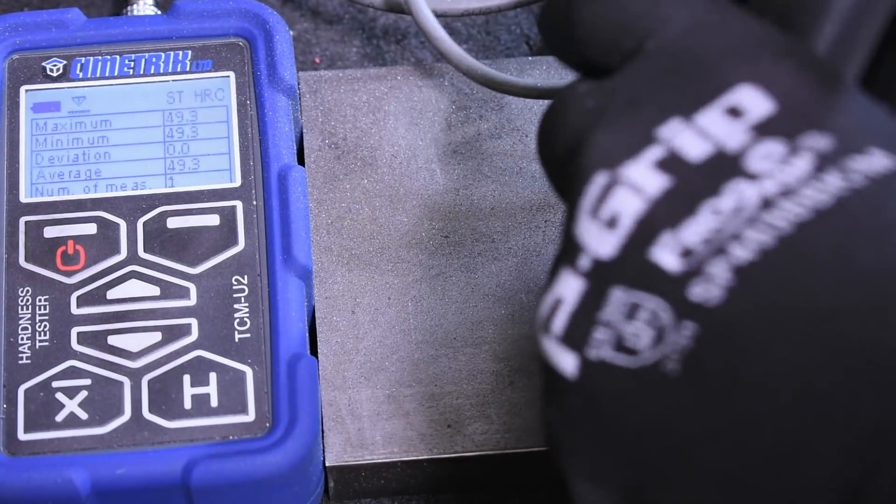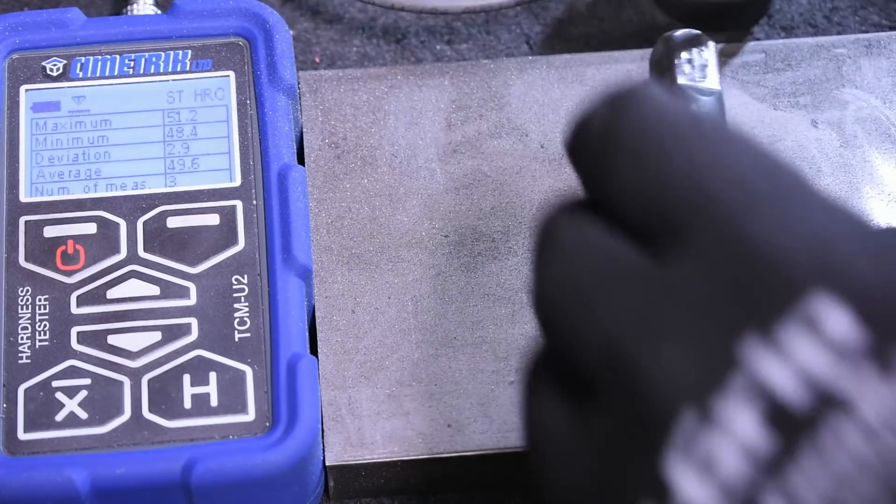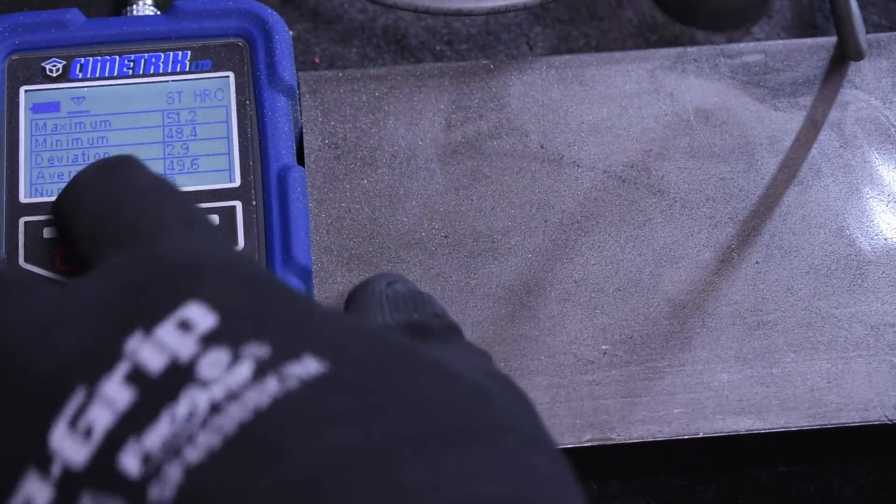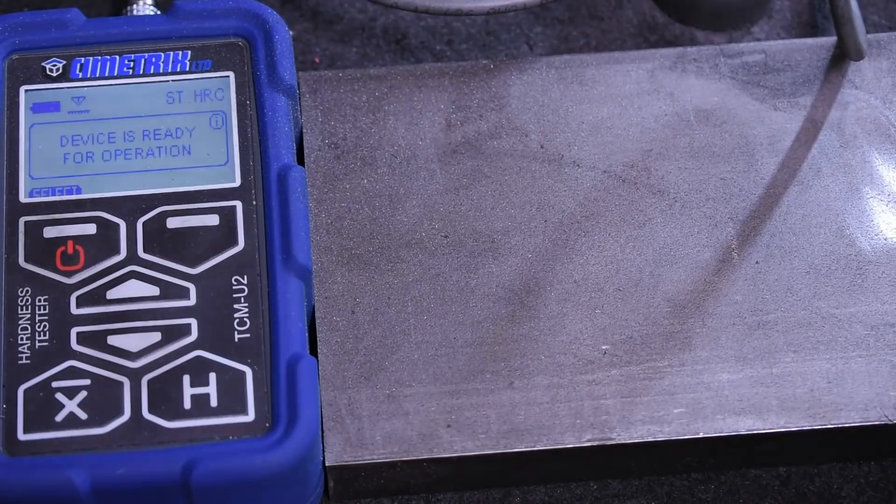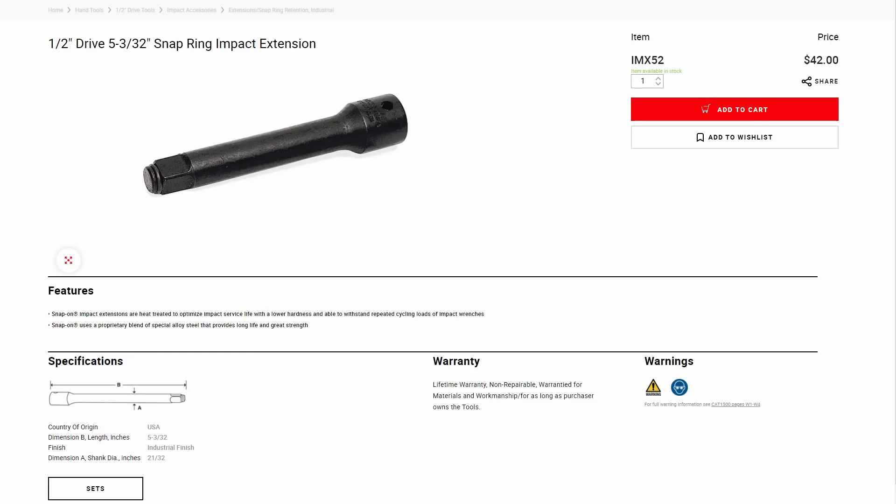The Neko impact extension comes in at a much harder, 49.6 RC. All being equal, this should be a more rigid piece when we're talking torsional axle transferring power. But that's a bit of a stretch of an assumption to say, all being equal. These tools are almost certainly not equal.